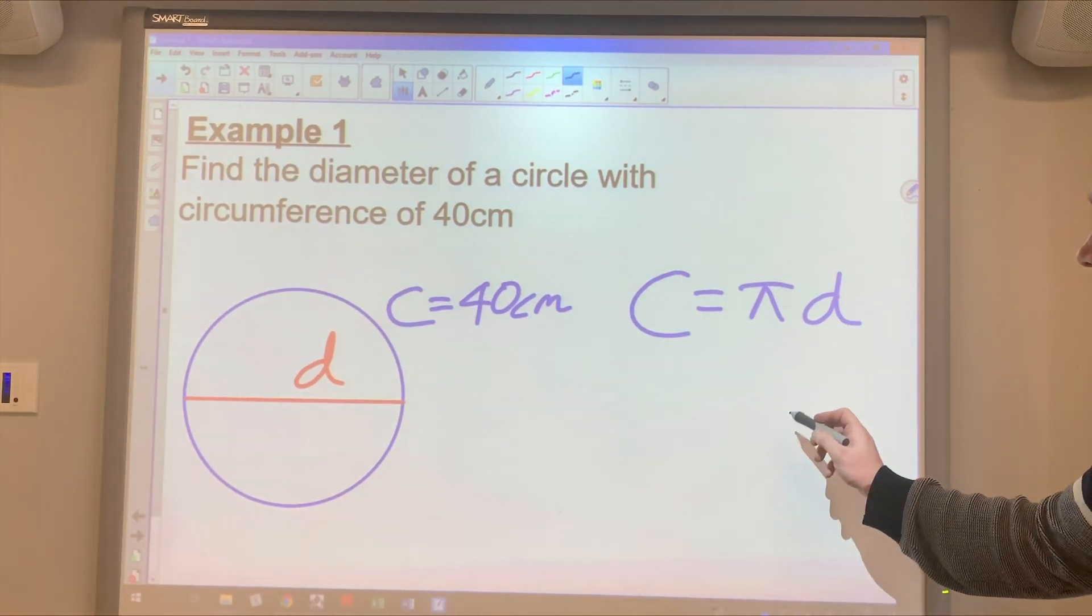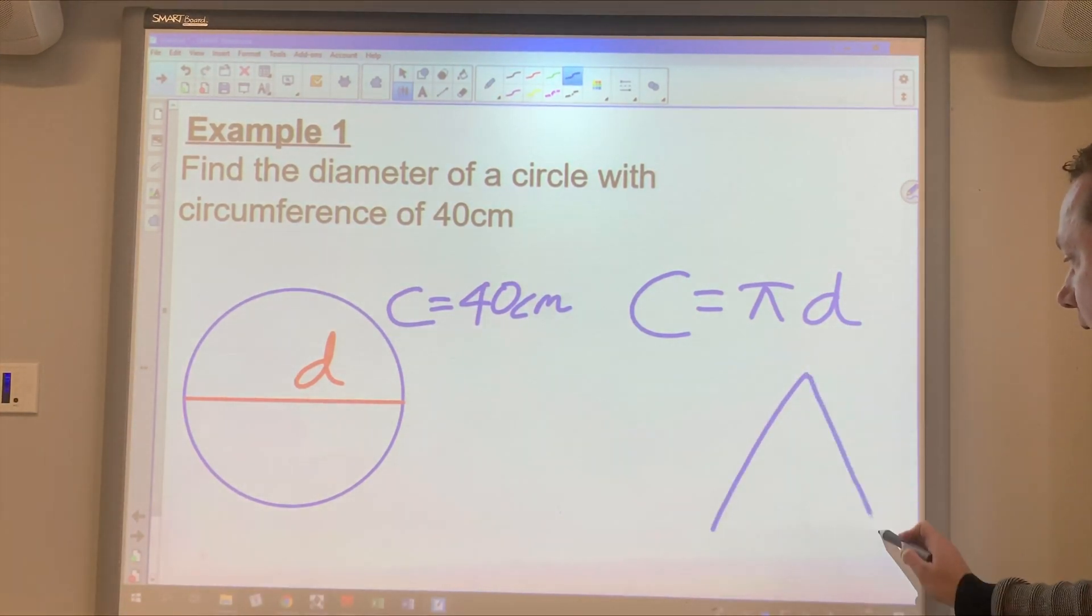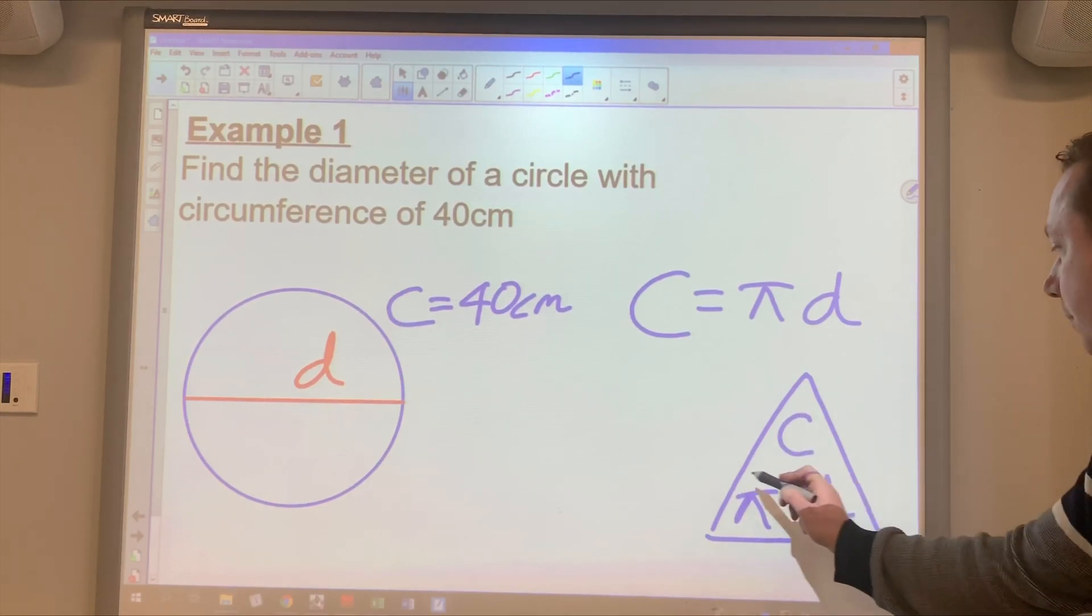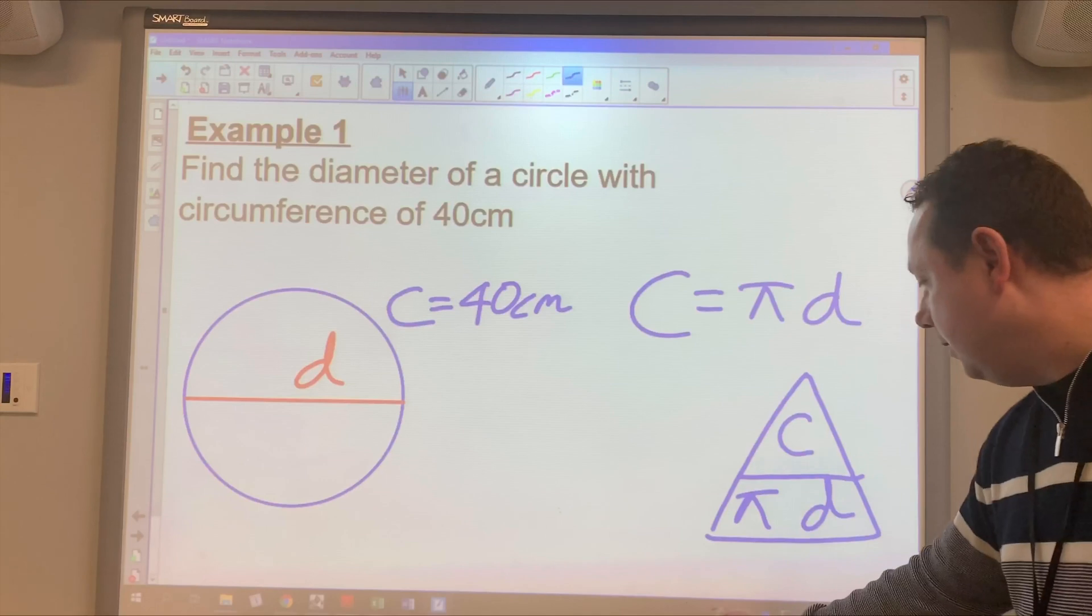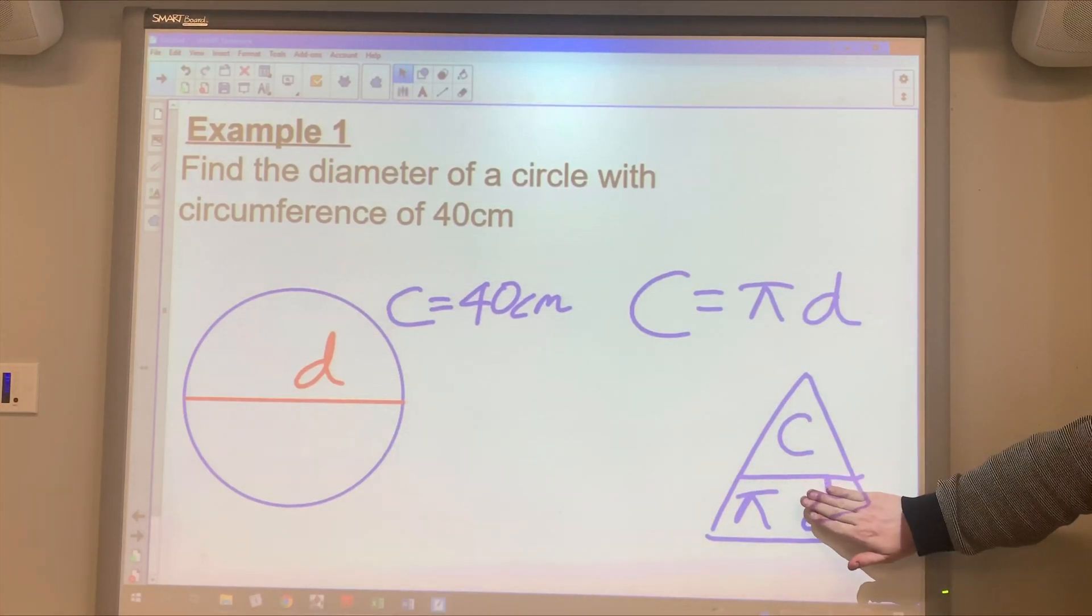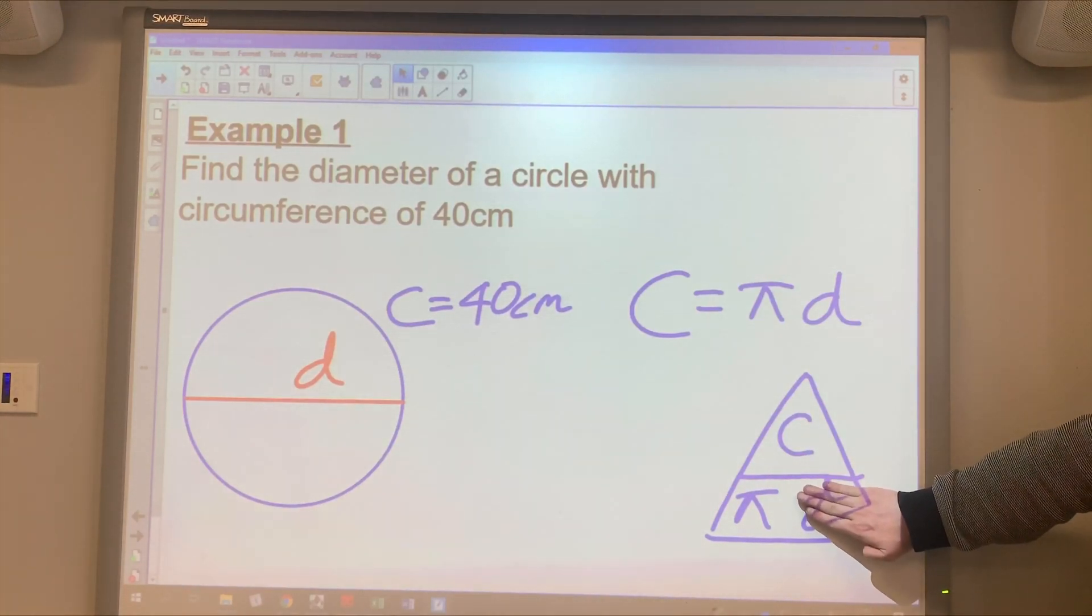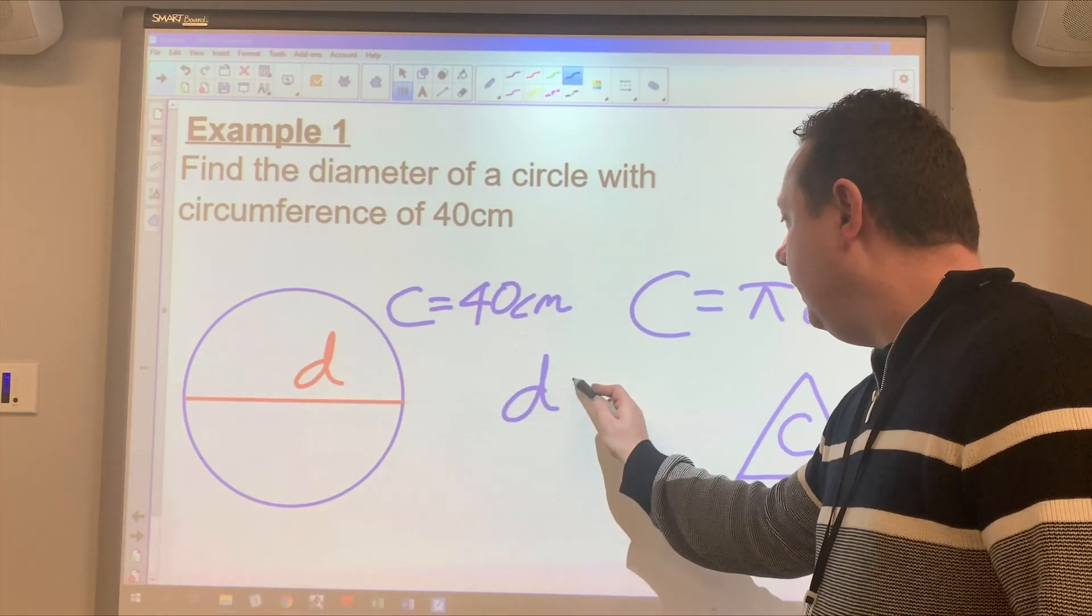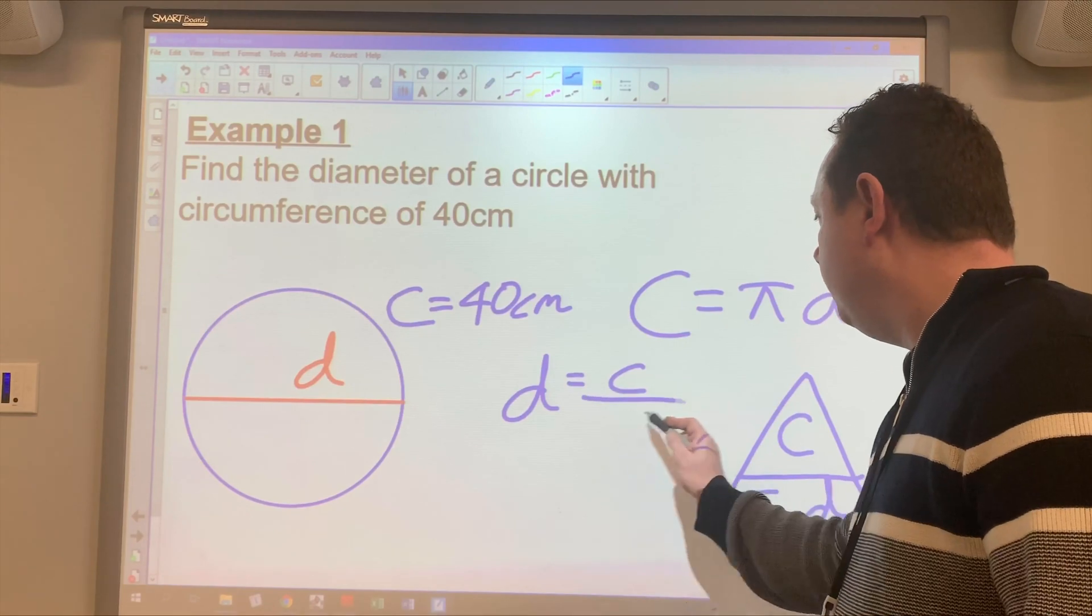So I'm going to rearrange this to get D. So I draw my triangle. C at the top, pi D at the bottom, separated by a line. I cover up D because that's what I want to find. And it says C over pi. So that's what I write down. D equals C over pi.